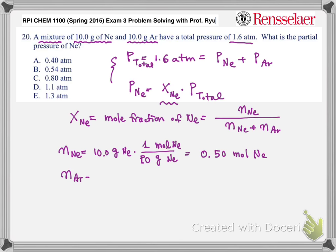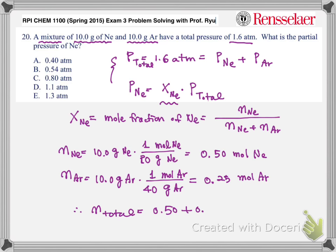Moles of argon, which is now mass is given as 10 grams of argon, multiply grams of argon changing to moles of argon. And 40 grams will correspond to 1 mole of argon. So therefore, this is 0.25 moles of argon. So therefore, total number of moles is 0.75.